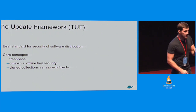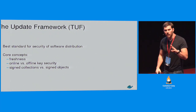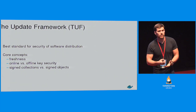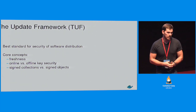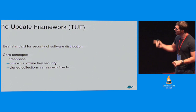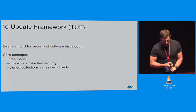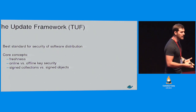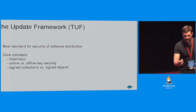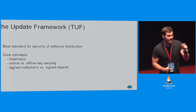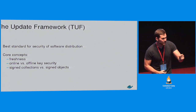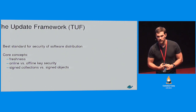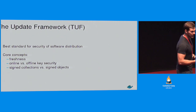TUF provides some very interesting guarantees and has three core foundational concepts. The first is freshness — everything in the update framework has an expiration. This gives us the ability to resist replay attacks. In TUF, I can guarantee not only that your content is signed by the key you want, but also that you're getting the latest version of the software. You can no longer be served a two-year-old image signed with a key that hasn't expired yet.